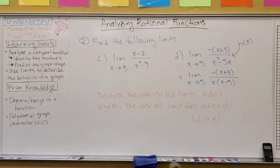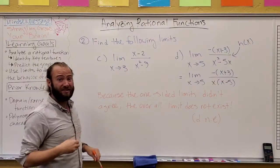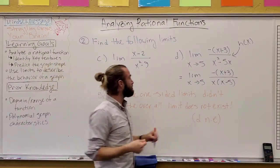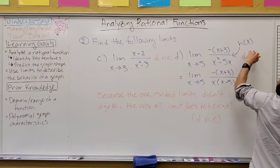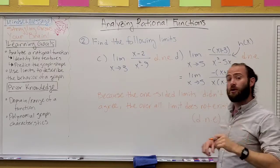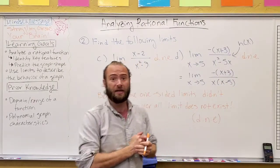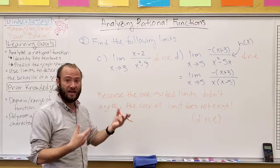so just saying the limit, turns out it does not exist. And so, we usually write, for short, d, n, e. But, it's still important to be able to find a one-sided limit and use a table or a graph to kind of talk about that.